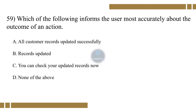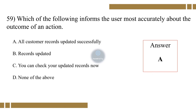Question 59. Which of the following informs the user most accurately about the outcome of an action? Option A: All customer records updated successfully. Option B: Records updated. Option C: You can check your updated records now. Option D: None of the above. The correct option is A.